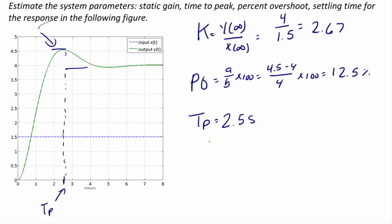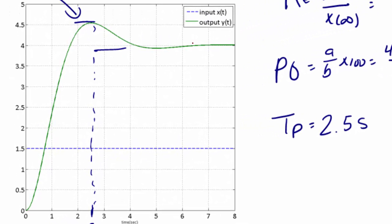The settling time is the time it takes for the output to stay within 2% of its final value. Two percent of the final value of 4 corresponds to the range 3.92 to 4.08. Reading from the graph, the response enters and stays within this band at approximately 4 seconds, so the settling time is 4 seconds.